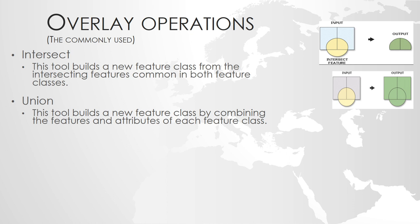The next operation, which is somewhat related to it, is the union. The union returns the area that is covered by any of the layers. In this case, we will have areas that are covered by one layer and areas that are covered by another layer.